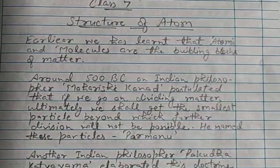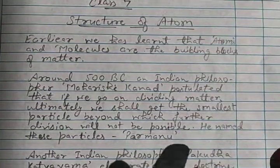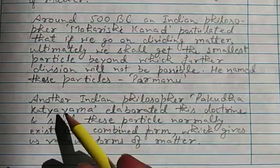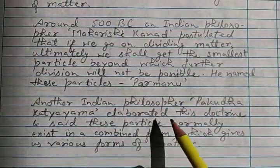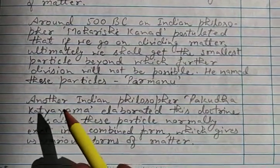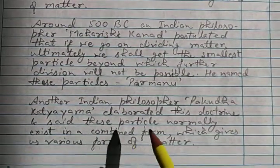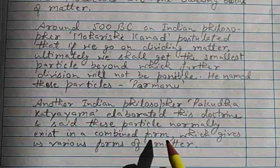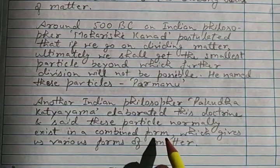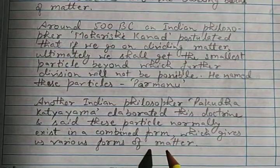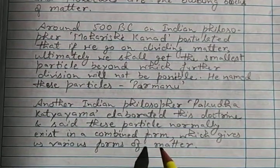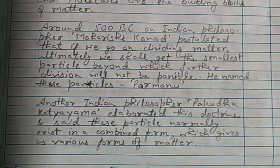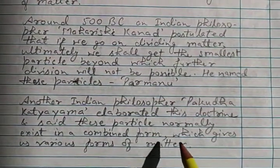Anu means the name of that particle — so param plus anu gives us 'parmanu.' Now another Indian philosopher, Pakudha Katyayama, elaborated the doctrine of Kanad. He said that these particles normally exist in combined form. As I have already taught you in the structure of matter, the atom of oxygen cannot exist alone, and atom of hydrogen cannot exist alone.